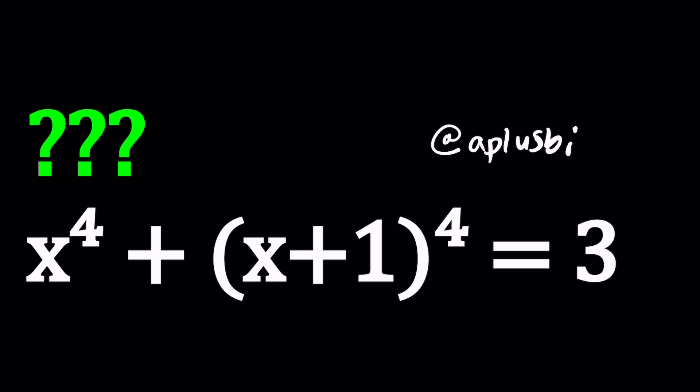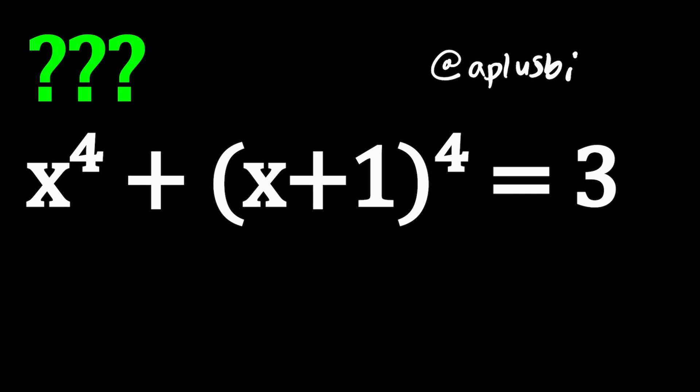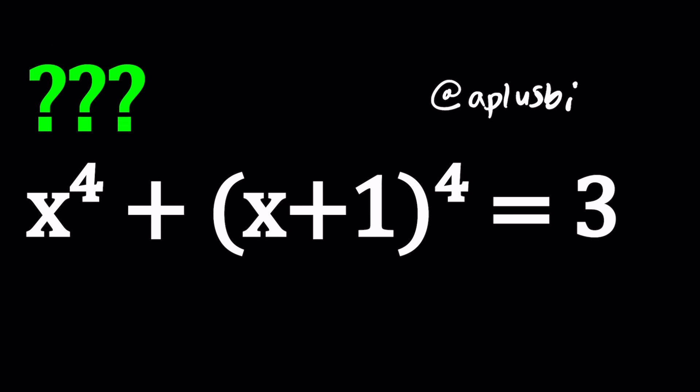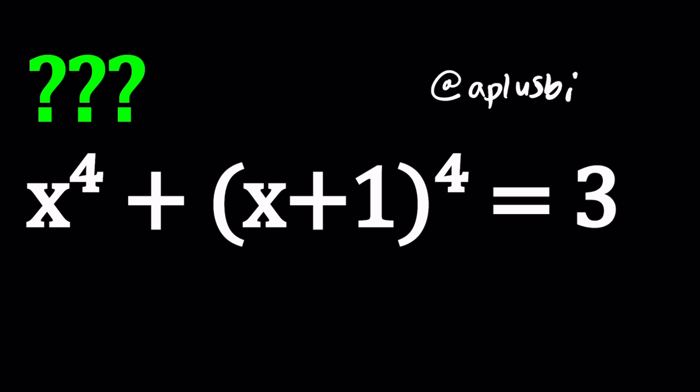So we have x to the fourth plus the quantity x plus one to the fourth equals three, and we're going to solve for x values. Let's go ahead and see how we can solve a quartic like this. Here's the first method.